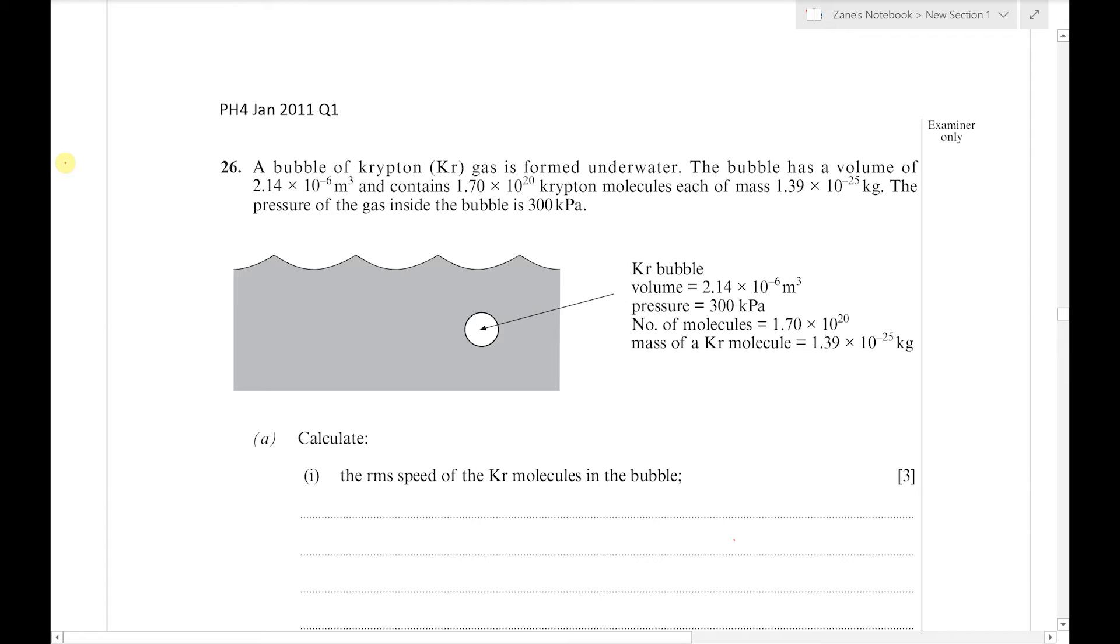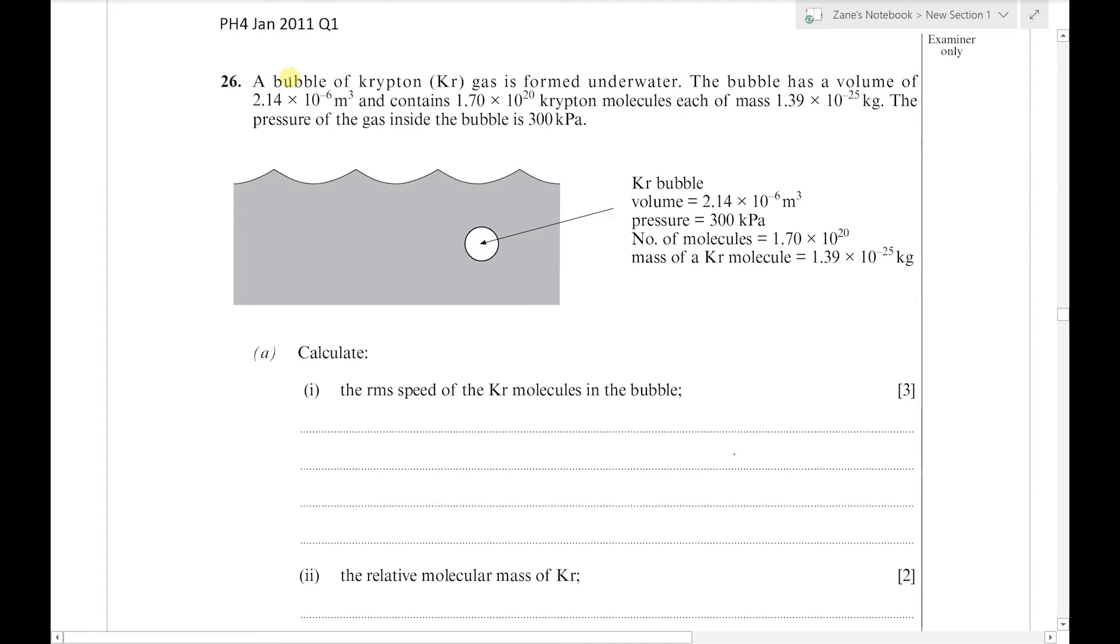Hello and welcome to another WJEC A-level physics question. This was question one on the January 2011 unit 4 paper about gas laws. We've got a krypton gas bubble formed underwater and we're given various information about the bubble, including its volume, the number of molecules, and the mass of each molecule.